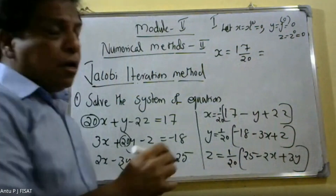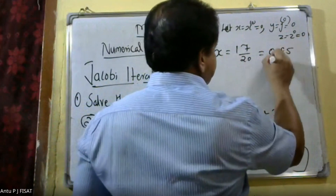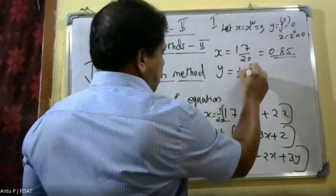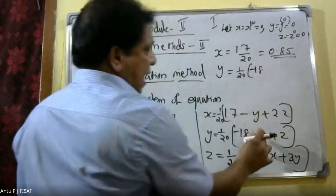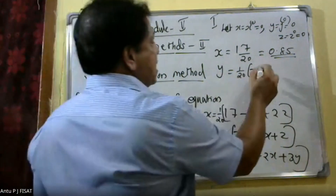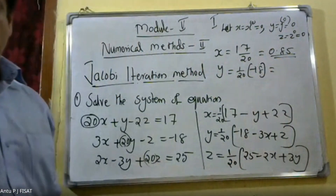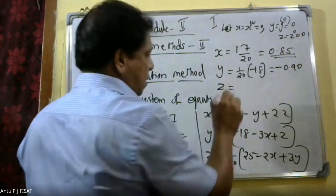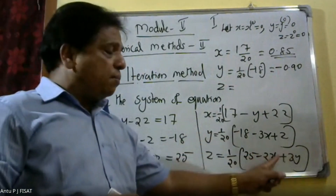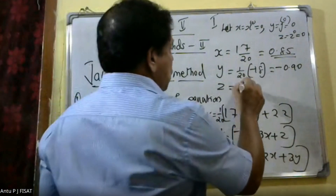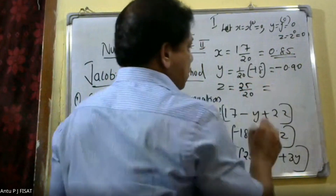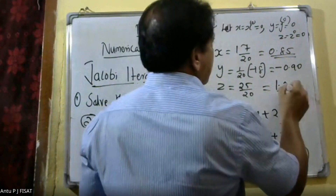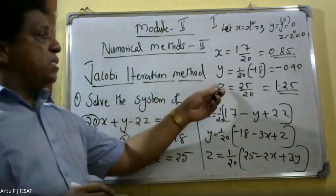Substituting into the first equation gives x raised to 1 equal to 0.85. Substituting into the second equation: y raised to 1 is equal to (1/20)(-18) = -0.90. For z, substituting gives z raised to 1 equal to 25/20 = 1.25. So after the first iteration: x = 0.85, y = -0.90, z = 1.25.